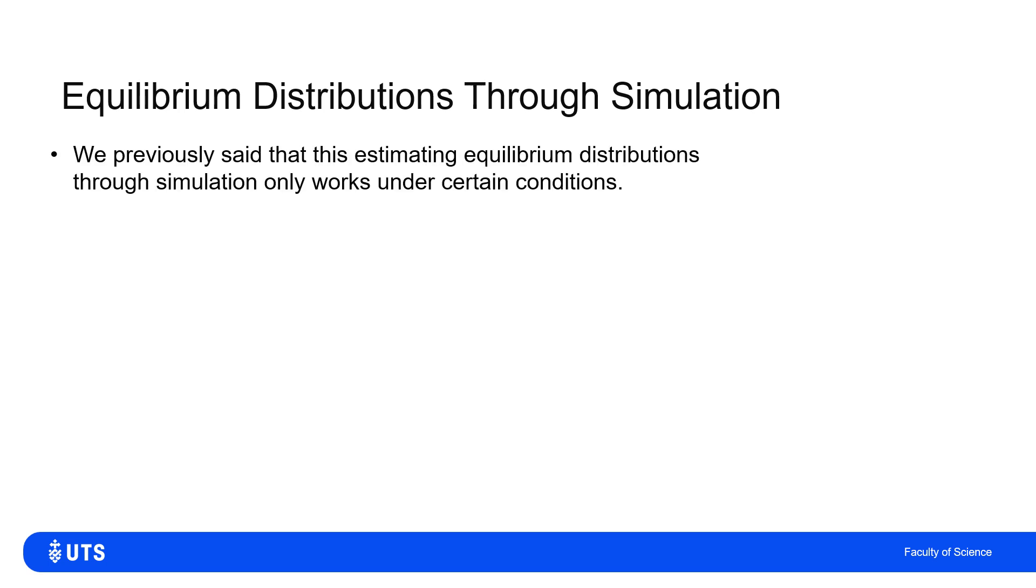We said in the previous video that we could estimate the equilibrium distribution for a Markov chain by simply running that Markov chain, by simulating the behavior and looking at what values we observe. Now, we also said that that only worked under certain conditions or certain situations. Now, whenever somebody says something like that to you, the very obvious question is, well, which conditions? What has to hold? If it doesn't hold, why not?